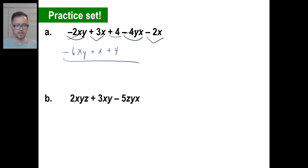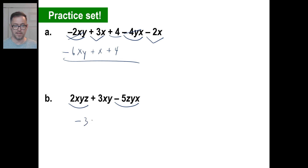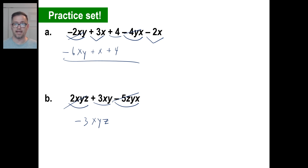Now let's try B. There's an xyz and another xyz in a different order — who cares? 2 of something minus 5 of something gives negative 3 of that something. Those are done. All we have left is a 3xy, which doesn't go with xyz because it doesn't have a z. We can't add those together — that's like trying to add apples and oranges. That's all you need to do for B.